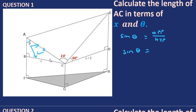So sine theta equals x over AC, where BC is x and the hypotenuse is AC. To simplify, we swap sine theta with AC, giving us AC equals x over sine theta. We have written AC in terms of x and sine theta. Let's go to question two.